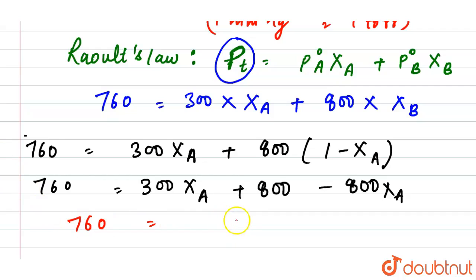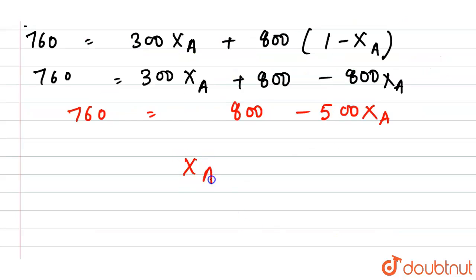So the mole fraction of A is equal to 40 upon 500, which is 0.08.